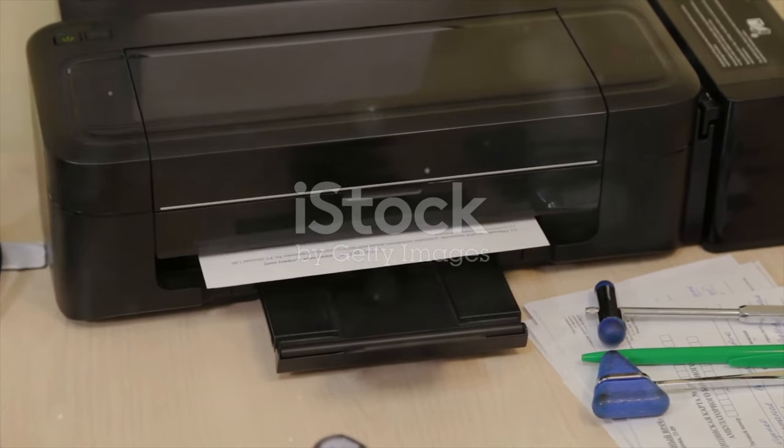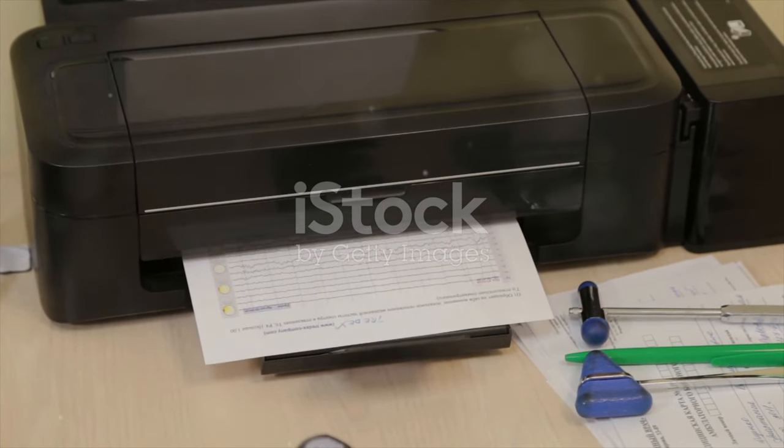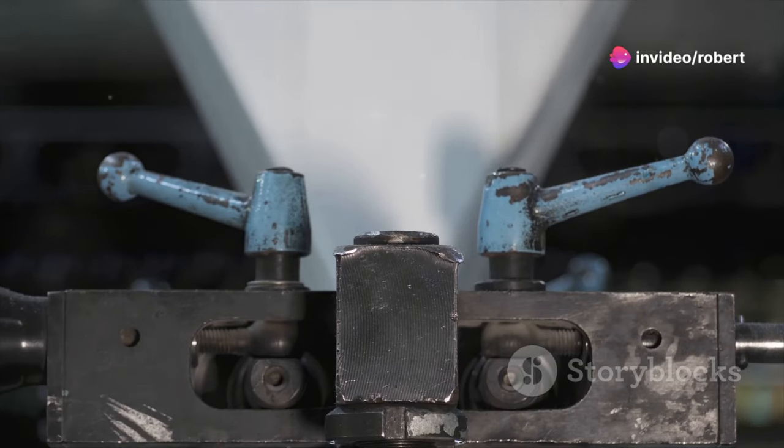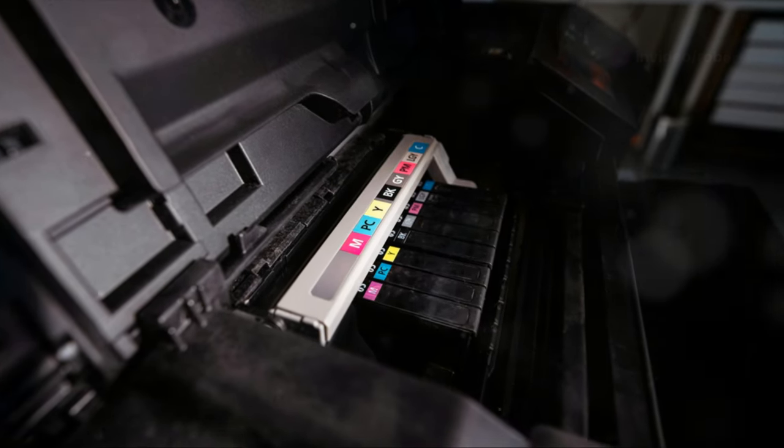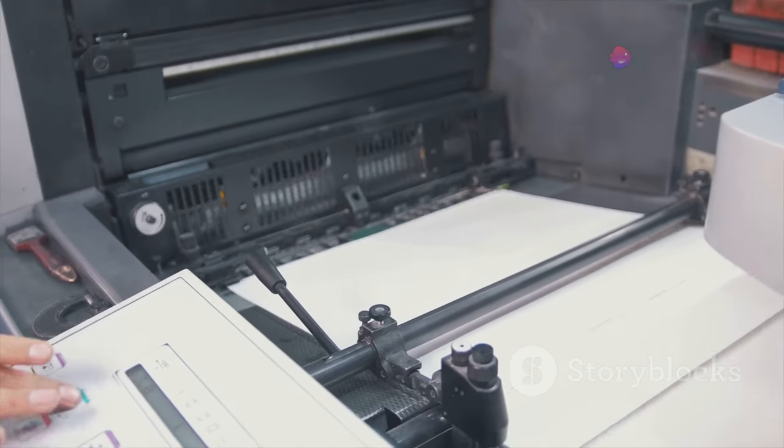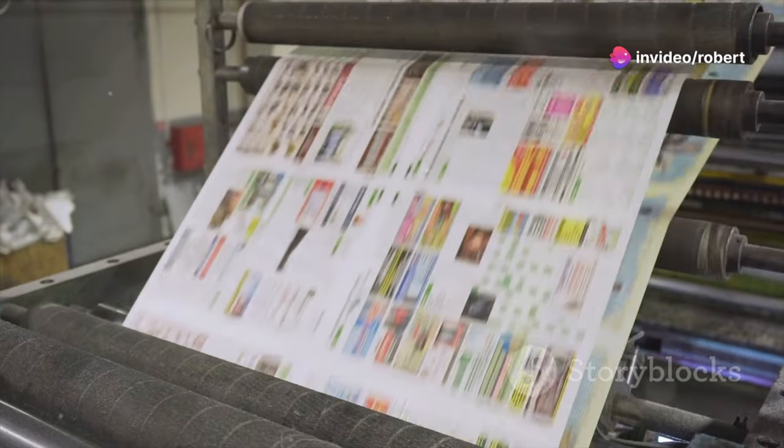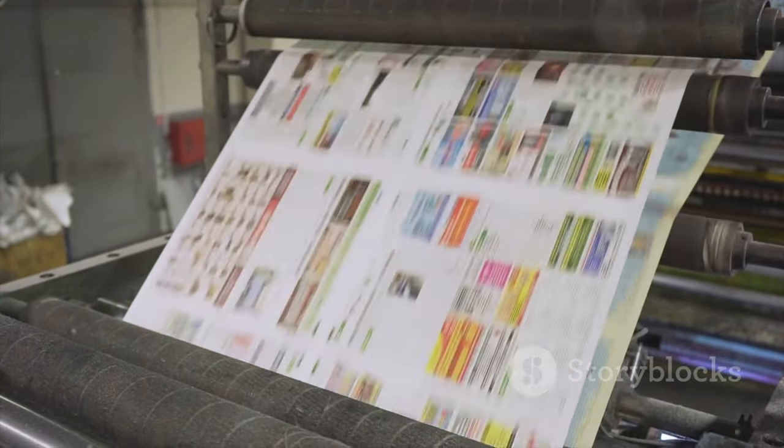While RGB reigns supreme in the digital domain, where screens emit light to create vibrant colours, the physical world of print operates on a different set of rules, relying on the CMYK colour model to bring images to life on paper. Enter CMYK, short for cyan, magenta, yellow and key black. These four colours are the building blocks of printed media. Unlike RGB, which adds light to create colour, CMYK works by subtracting light. This subtractive process involves layering inks to absorb certain wavelengths of light and reflect others.